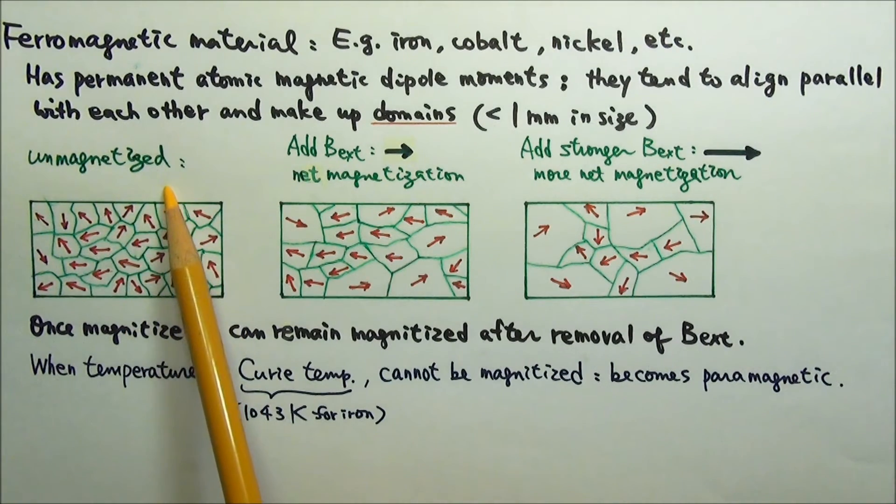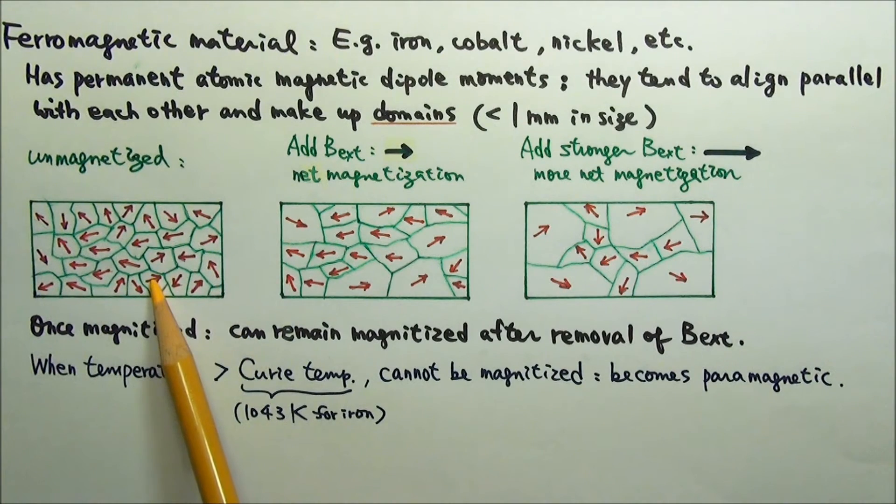When unmagnetized, the magnetic moments of the domains are randomly oriented, so that the net magnetic moment is zero.